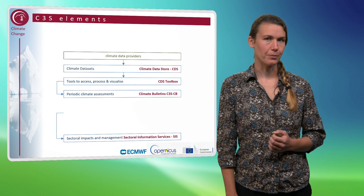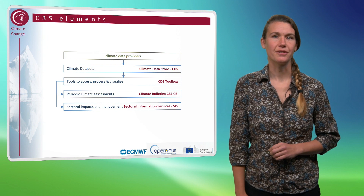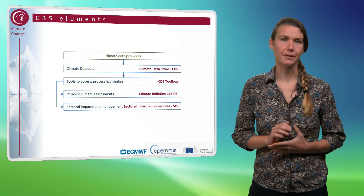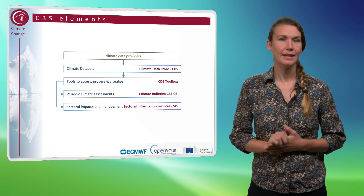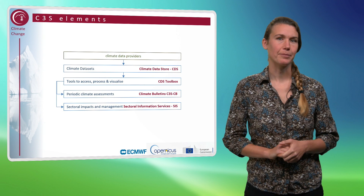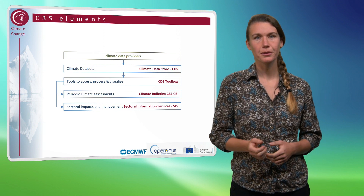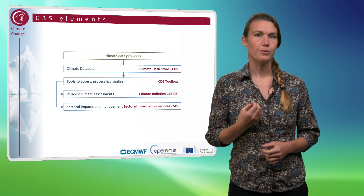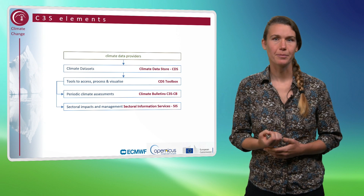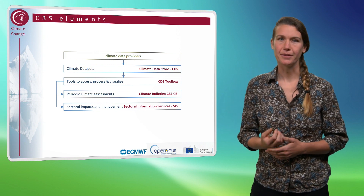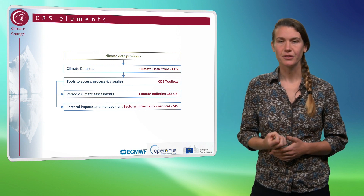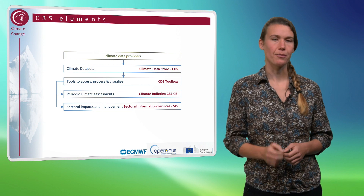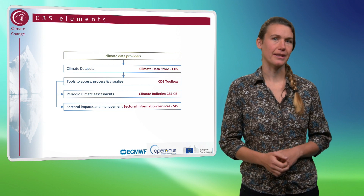A very important part of the Copernicus Climate Change Service are what we call the sectoral information systems. These are being developed in close collaboration with sectoral representatives — people from agriculture, water management, or other sectors — to make much more tailor-made, pre-processed data relevant for the respective sectors.